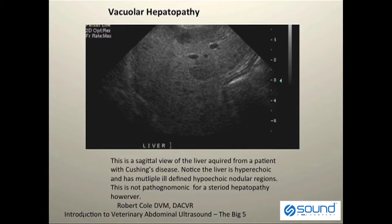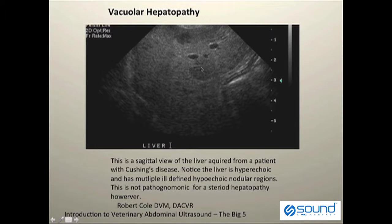This is an example of a common pathology identified in our canine patients, typically referred to as a vacuolar hepatopathy. In this particular image we can see that the liver is uniformly hyperechoic. It's difficult to identify the portal vasculature, and there are multiple ill-defined hypoechoic nodules as being outlined on the screen.